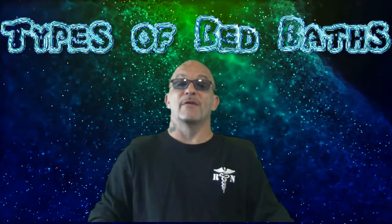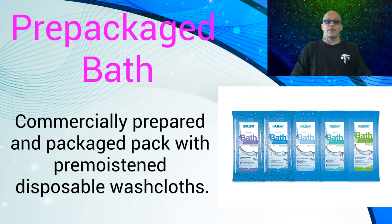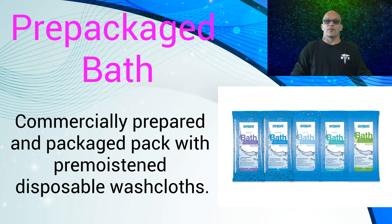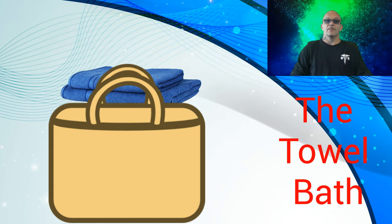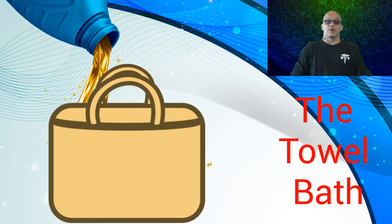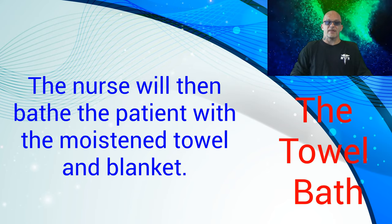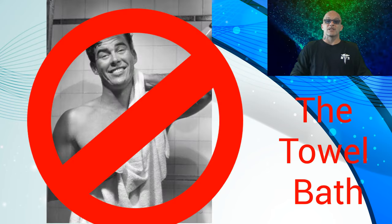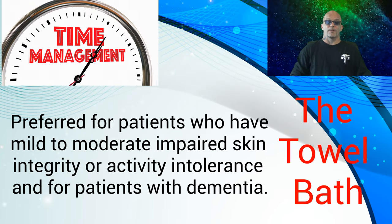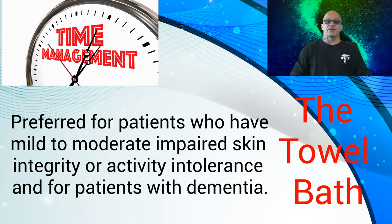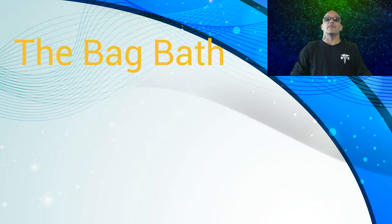We will now discuss the four types of bed baths that can be completed. There is the pre-packaged bath, which is a commercially prepared and packaged pack with pre-moistened disposable washcloths. The towel bath: the nurse will place a towel and bath blanket in a plastic bag, then add a warm pre-prepared commercial mixture. The nurse will bathe the patient with the moistened towel and blanket — the solution does not require towel drying. This method is considered time efficient and is preferred for patients who have mild to moderate impaired skin integrity, activity intolerance, or dementia.